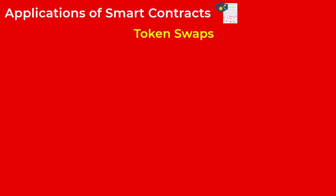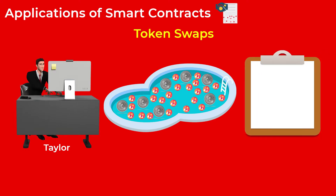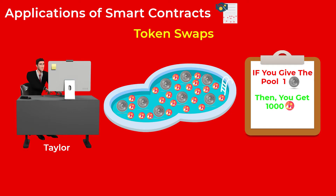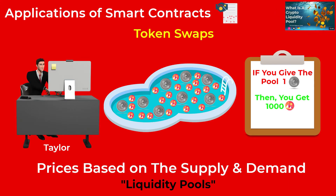The most popular application of smart contracts is their use in token swaps, where you can make a pool of two tokens and allow other people to swap their tokens. For example, a smart contract can say: if you give the pool one Ethereum, you will get 1,000 MANA tokens. When people want to swap their Ethereum to MANA, they deposit their Ethereum into the pool and get their MANA tokens automatically, without any human intervention. The pool adjusts prices automatically with a mathematical formula based on supply and demand. These pools are called liquidity pools.